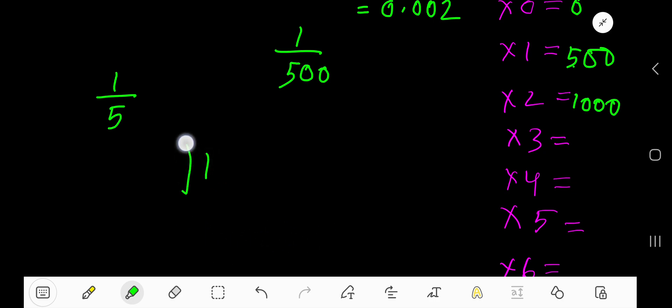Now divide 1 by 5. 5 goes into 1 zero times. 0 times 5 is 0. If you subtract, you get 1. Take a decimal here and bring down this 0. Since we're bringing down this 0, the decimal must come here.